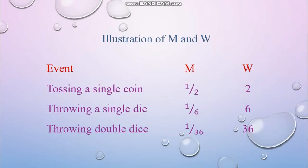Let's give some more examples. For a coin: mathematical probability is 1/2 and thermodynamic probability is 2. If you are throwing a single die, it has six faces numbered one to six. Each face can happen — there are six possible outcomes, each occurring one time. So the mathematical probability for any specific face to happen is 1/6, and for it not to happen is 5/6.